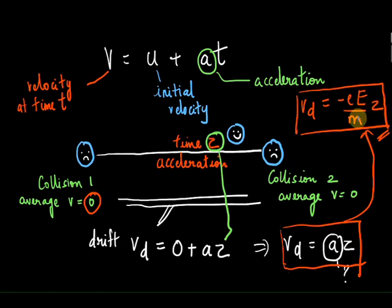But we still don't know how our drift velocity is related to the current. Now that would be an extremely useful relationship to have, as we would know how the change in the drift velocity alters the current flow. So let's try and find that out.